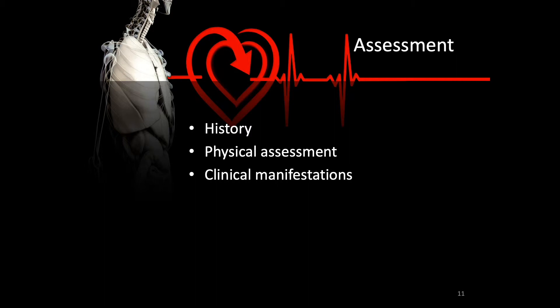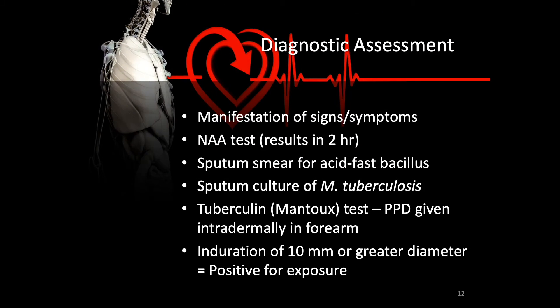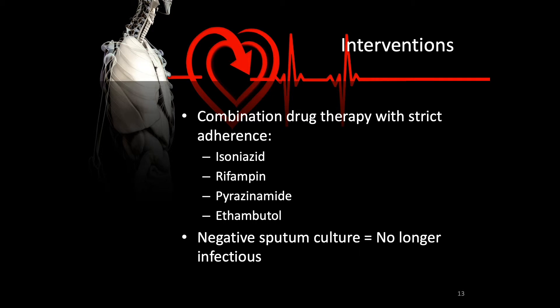The onset of TB is generally quite slow. Diagnosis is done through signs and symptoms, the nucleic acid amplification (NAA) test with results available within two hours, a sputum smear for acid-fast bacillus, sputum culture for M. tuberculosis, and the tuberculin Mantoux test — PPD given intradermally in the forearm. An induration of 10 millimeters or greater diameter indicates the patient has been exposed to TB bacteria. The goal of combination drug therapy — isoniazid, rifampin, pyrazinamide, and ethambutol — is to reach a negative sputum culture, at which point the patient is no longer infectious.